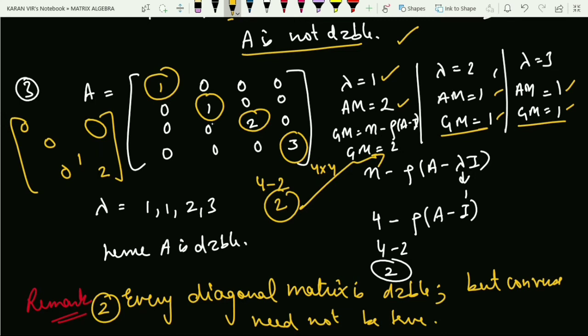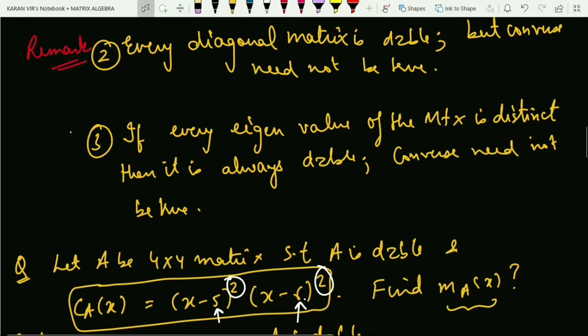For λ=1, AM equals GM. Similarly for λ=2, AM equals GM, and for λ=3, AM equals GM. Hence I will say that matrix A is diagonalizable.